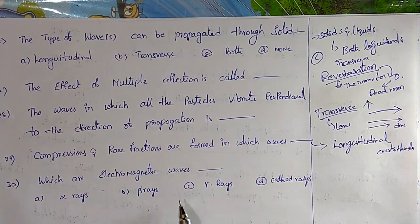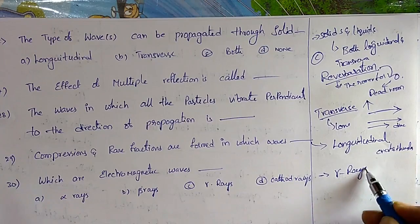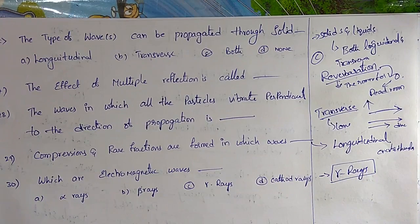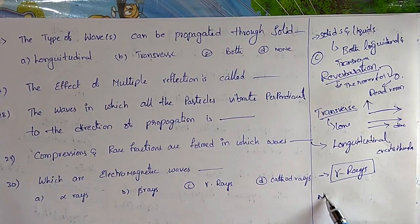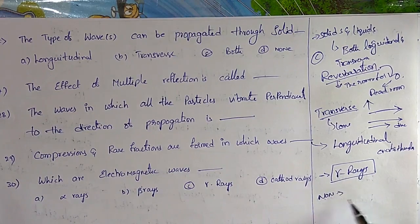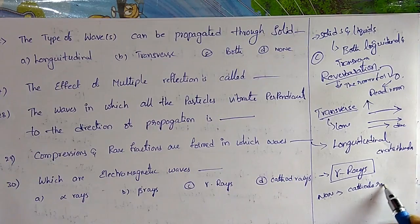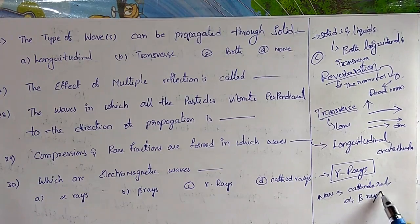Gamma rays are electromagnetic waves. Examples of non-electromagnetic waves are cathode rays, alpha rays, and beta rays.